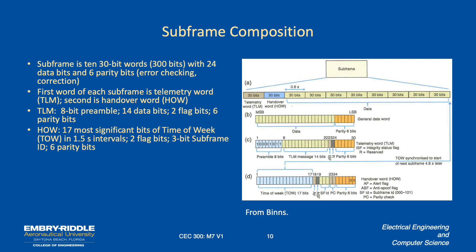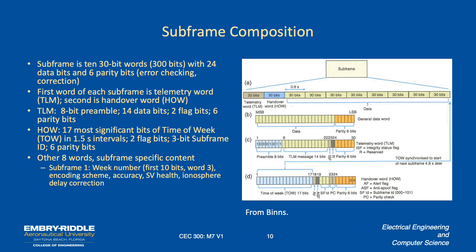The handover word also contains a subframe ID. The remaining eight words in each subframe have specific content depending on which subframe it is. Subframe 1 contains the week number (which pairs with the Time of Week from the handover word), coding scheme, service vehicle health, and ionospheric propagation correction information. Subframes 2 and 3 contain ephemeris data with an ephemeris data index. Subframes 4 and 5 contain the almanac data as discussed.